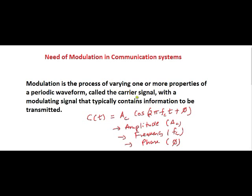Modulation is the process of varying either amplitude or frequency or phase with the modulating signal that typically contains information to be transmitted. Say our modulating signal is M(t), we can write it as AM cos(ωm t), where ωm is 2π fm. Relating these two signals, modulation is nothing but varying either of these three with the modulating signal. This is called modulation.